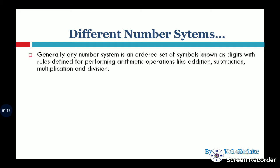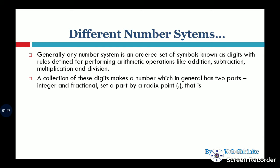Generally, any number system is an ordered set of symbols — for example, 0, 1, 2, 3 — also known as digits. These digits can be used for arithmetic operations like addition, subtraction, multiplication, and division by predefined rules. Depending on the symbols used, the number system is defined. The collection of these digits makes a number, which generally has two parts.